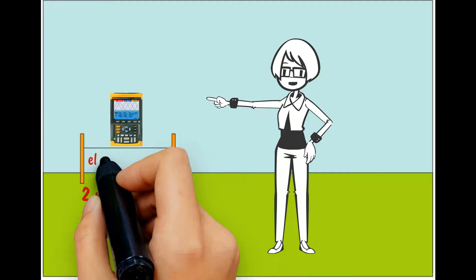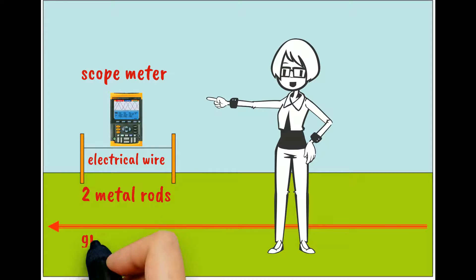Here we have two ground rods connected with electrical wire to a scope meter.